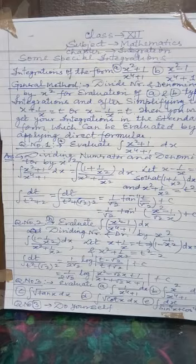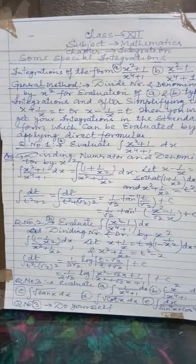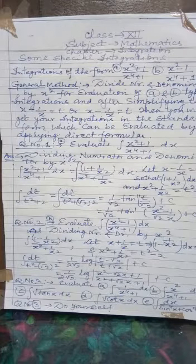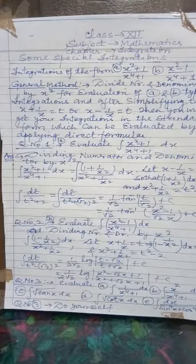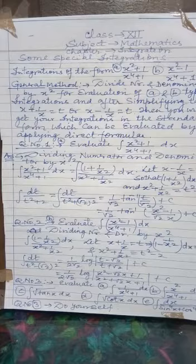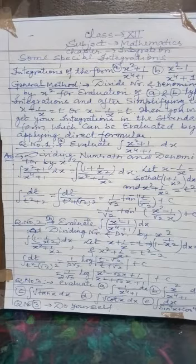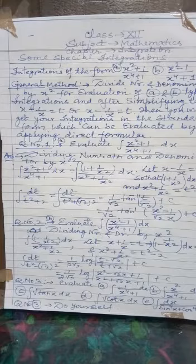This is necessary to know. First, divide the numerator and denominator by X² for evaluation of A and B type. Then, after simplifying, take X + 1/X = T or X − 1/X = T, according to whether you get the numerator as the differential of (X + 1/X) or (X − 1/X). You will then get your integration in standard form in terms of T, which are quadratic binomials.